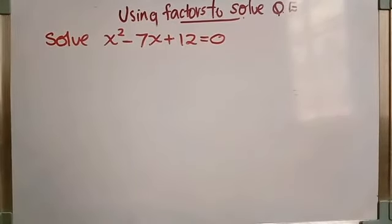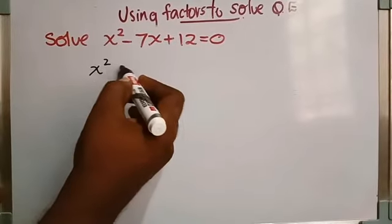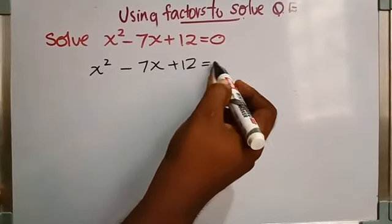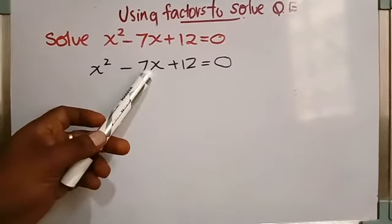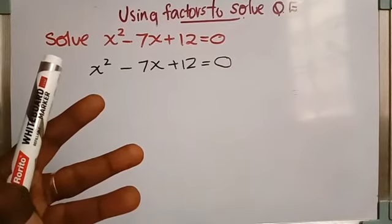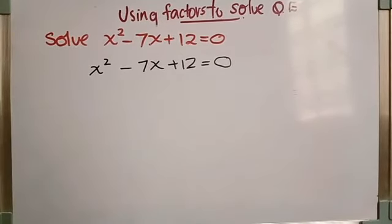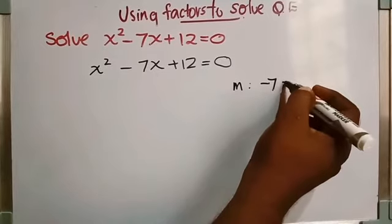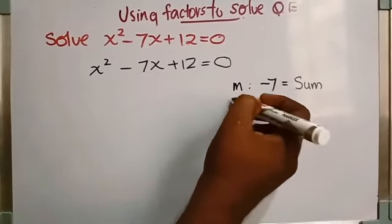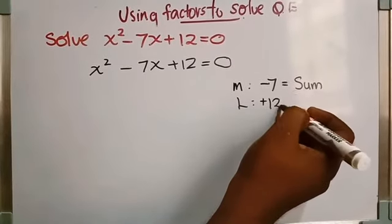Another question: Solve x squared minus 7x plus 12 is equal to zero. We have to solve x squared minus 7x plus 12 equals 0. We have to choose the convenient method. Here you have first term, middle term, and last term — there are three terms. So we can use splitting the middle term. The middle term is minus 7, which is the sum or difference, and the last term is plus 12, which is the product.